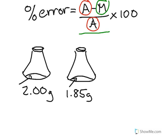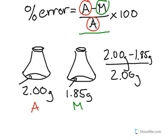Well, you'd plug all those values in. Again, this would be A, and this would be M. So let's plug those values in. So 2.00 grams minus 1.85 divided by 2 times 100.